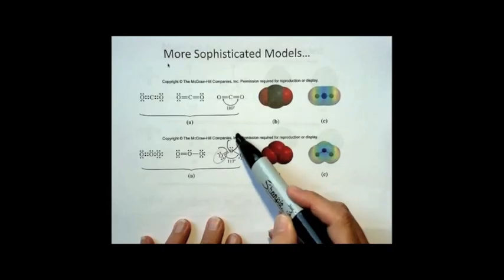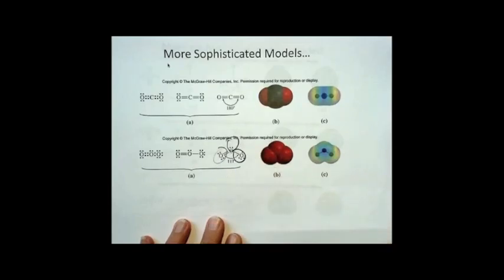Can you say what that would be? That would be trigonal planar. And the bond angle's not 120, it's 117, and you should be able to say why. So you should be able to figure all this stuff out yourself for ozone.